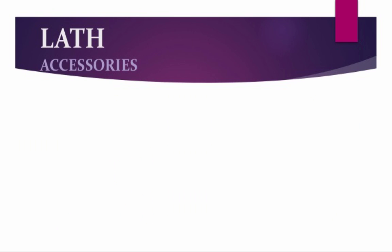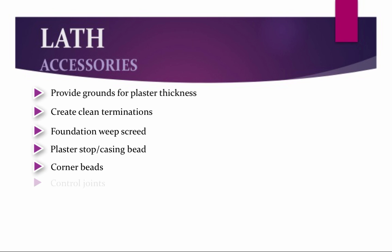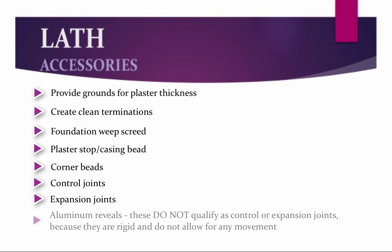There are many accessories that go along with metal lath. These accessories provide grounds for plaster thickness and create clean terminations. They include foundation weep screed, plaster stop (also known as casing bead or J-mold), corner beads, control joints, expansion joints, and aluminum reveals. Please keep in mind that aluminum reveals do not qualify as control or expansion joints because they are rigid and do not allow for any movement.